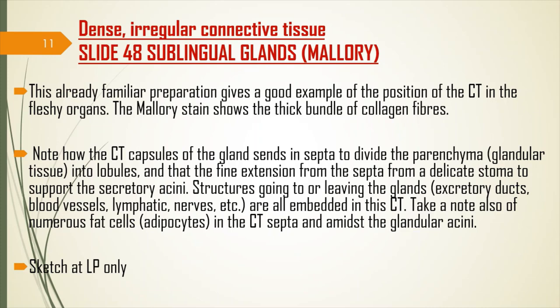Next is dense irregular connective tissue found in the sublingual glands — a familiar preparation from when we studied exocrine glands. It gives a good example of the position of connective tissue in fleshy organs. The slide shows thick bundles of collagen fibers. You only need to sketch this at low power, showing how the collagen fibers separate the parenchyma into lobules.